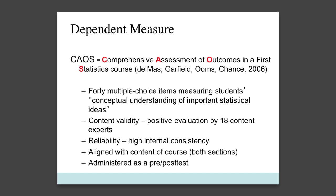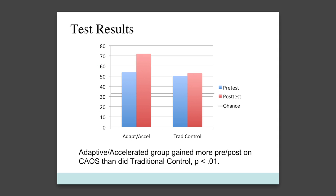To test the effectiveness of students' learning in the two conditions, we administered a pre- and post-test to students in both groups. This test is aimed at assessing students' conceptual understanding of statistics. Students in the online adaptive course actually improved 18 points from the beginning of the semester until when they finished studying the material eight weeks later.